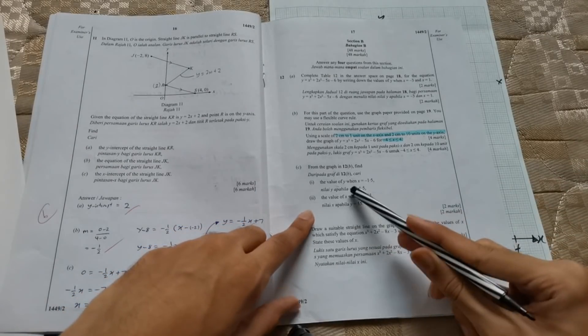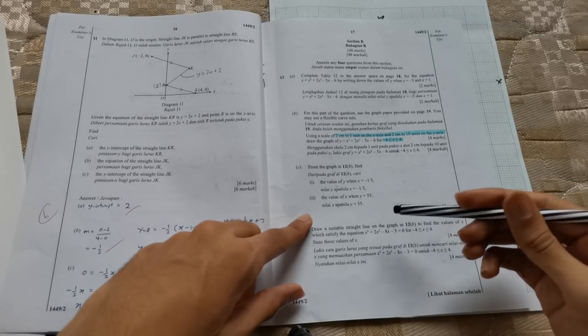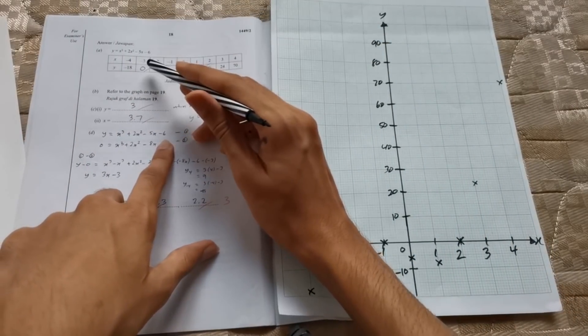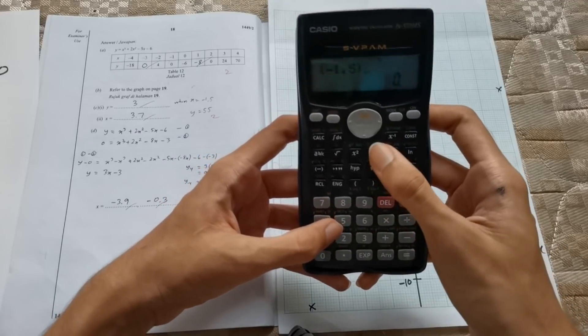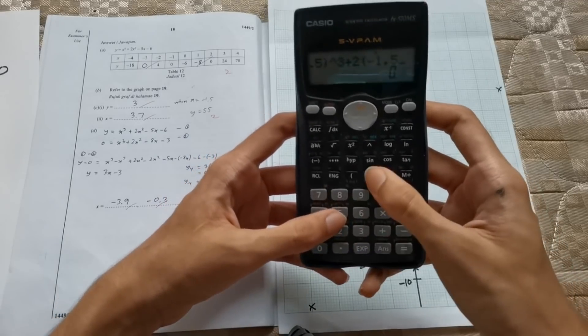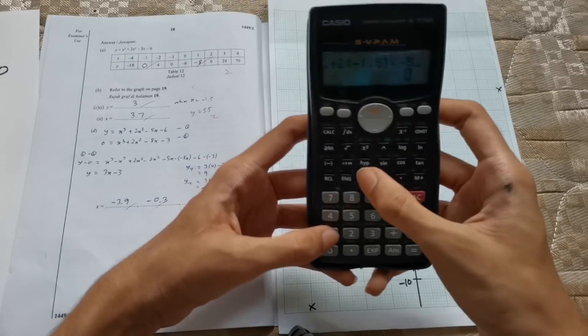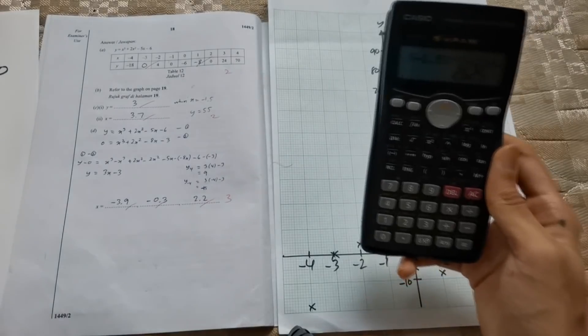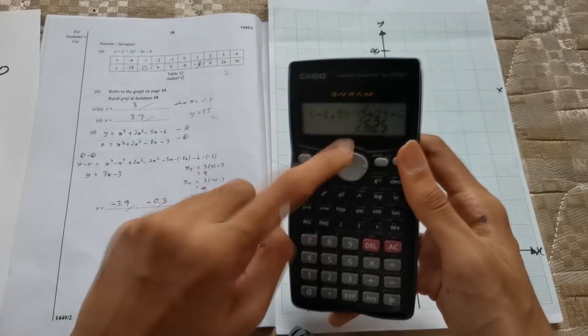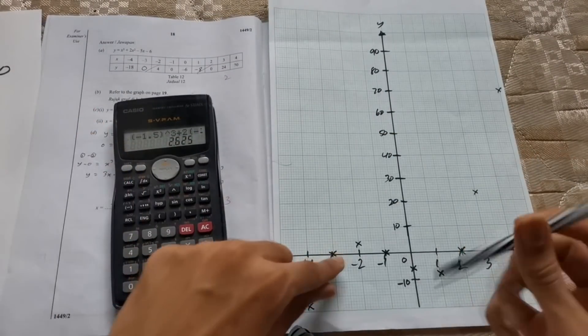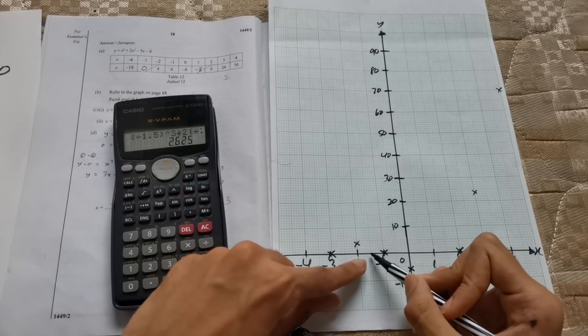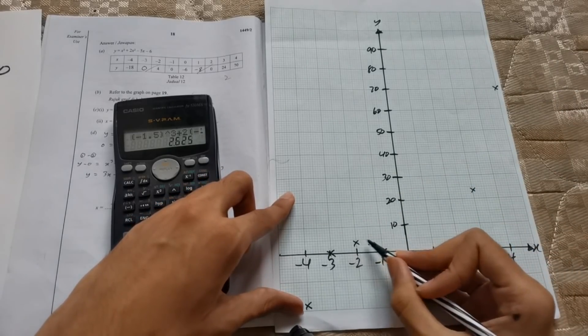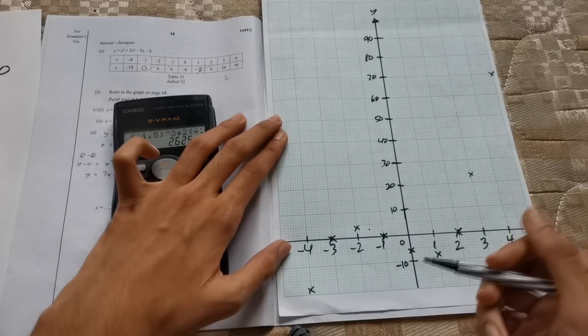The next question is, find the value of y when x equals to negative 1.5. So we're gonna substitute x equals to negative 1.5 into the y value to get an answer. You get 2.625. Now please do not write 2.625 in the answer here. I want you to round this off to the nearest whole number, which is 3. And then in the graph, when x equals to negative 1.5, I want you to do a small dot at 3, because now when you eventually draw your graph, I want you to go through this point perfectly.